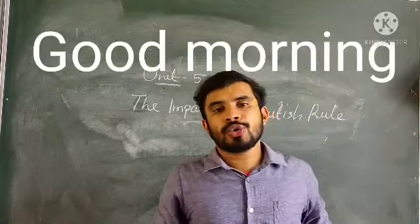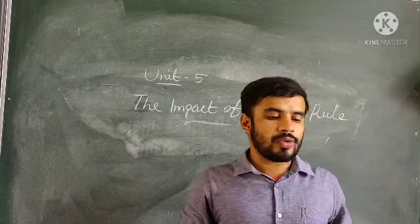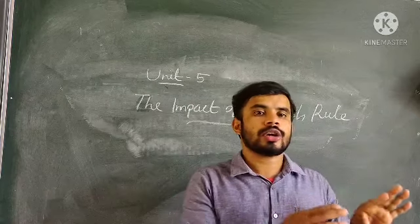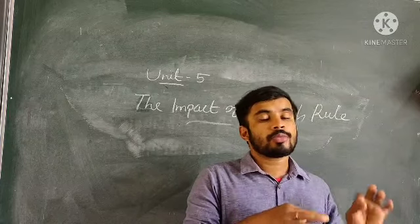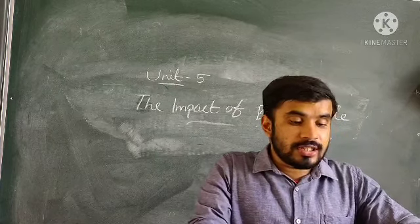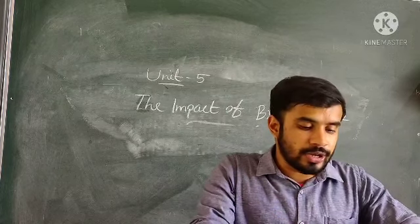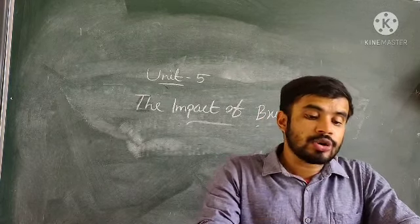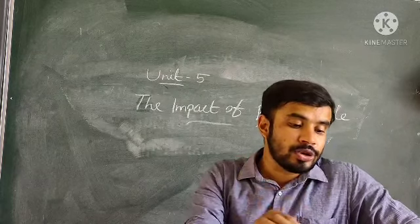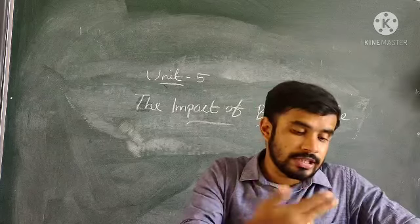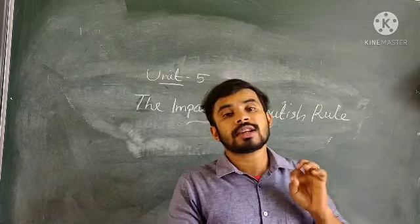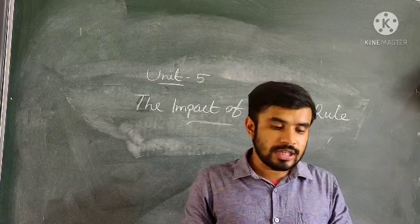Good morning everyone. In this session we are going to discuss Chapter 5: The Impact of British Rule. We have already completed the expansion of the British order. Now we are moving to the next unit. In this chapter we will see four topics: exploitation of the peasants, growth of transport and industries, impact of education, and social and cultural change.